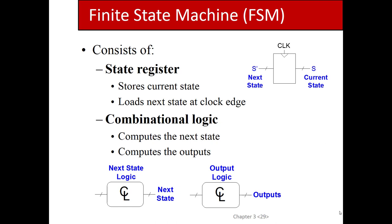Finite state machines are comprised of three parts. There's the state register that holds the current state, updated on every clock cycle. There is also combinational logic that forms the next state — in the book they use the prime notation, so if the current state is q, the next state is q prime. Don't confuse that with logical complement; they use it to denote next state.